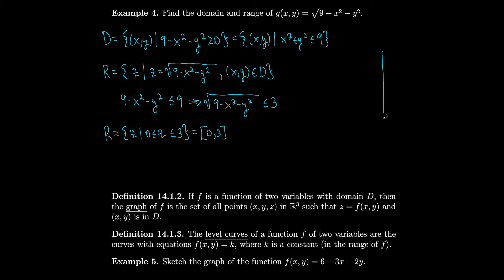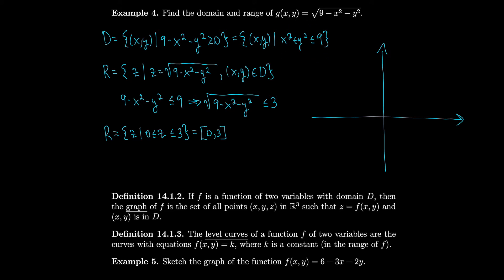Let's sketch the domain. The domain is just the disk x² + y² ≤ 9 — a circle of radius 3 centered at the origin — with everything inside shaded. Here 3 and −3 are marked on the axes.